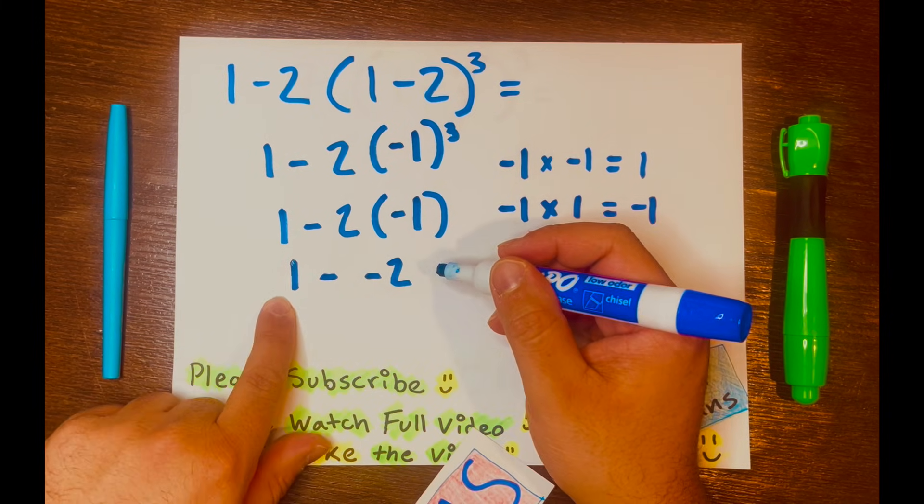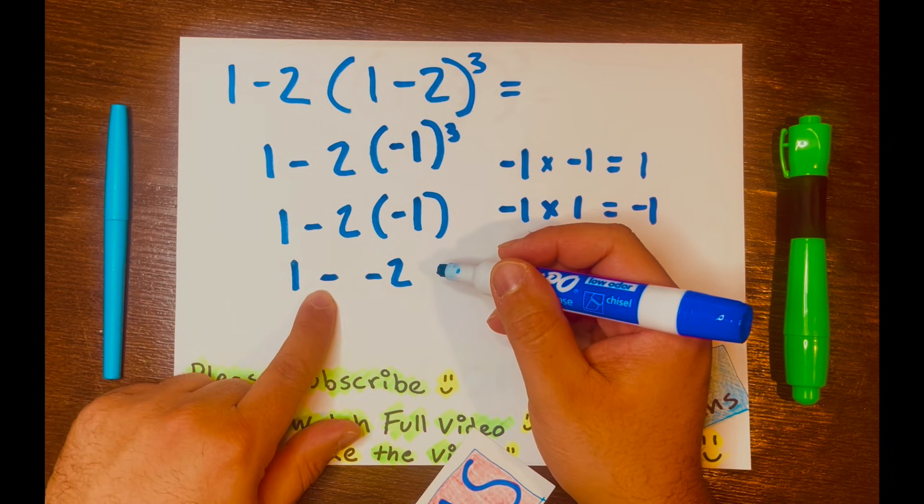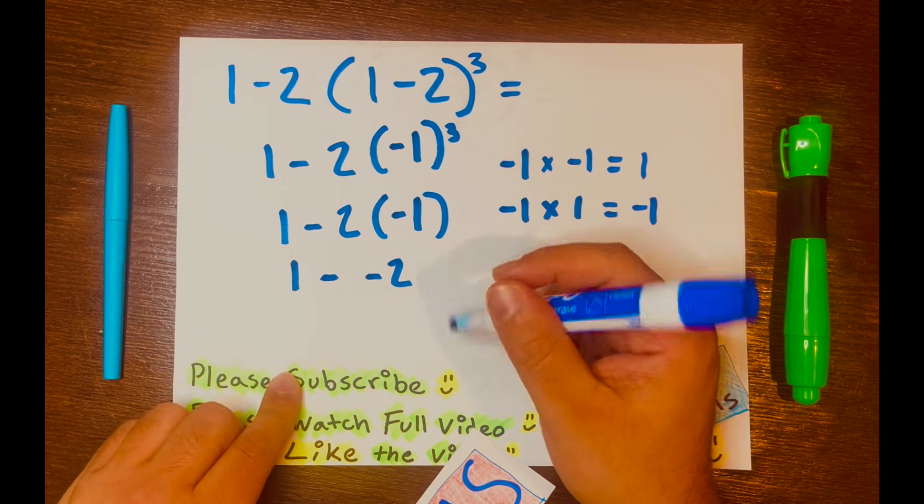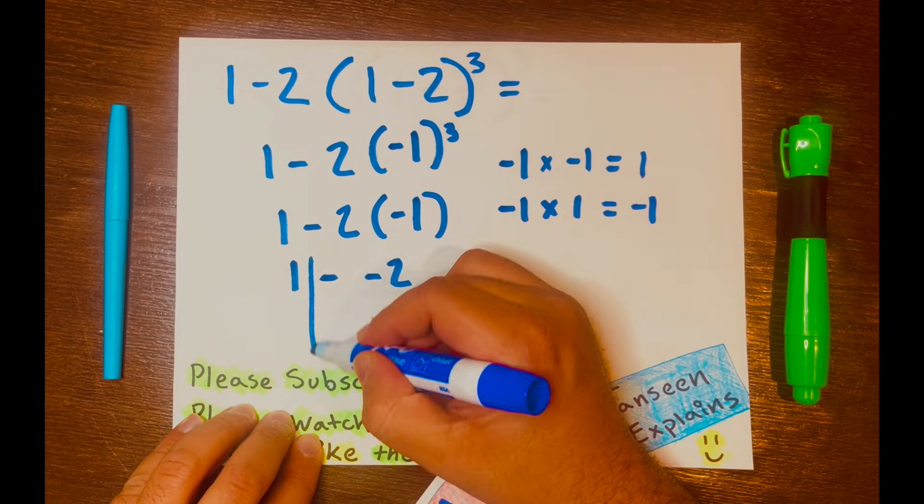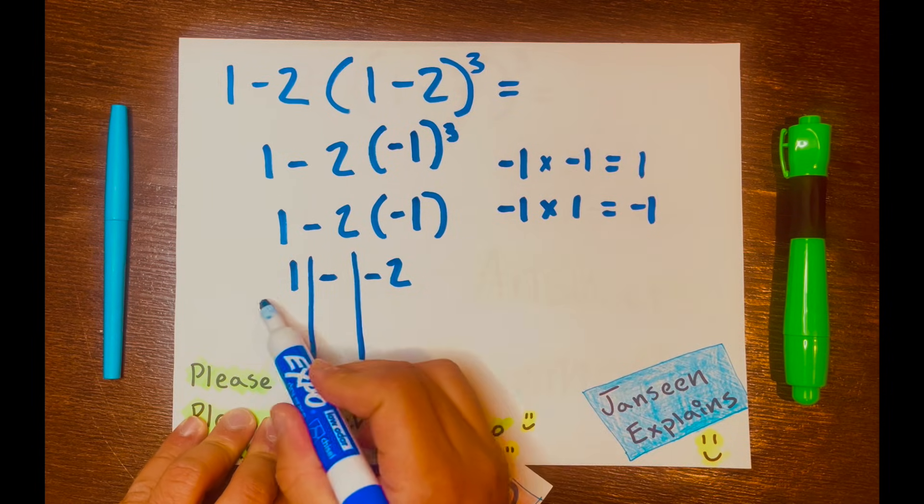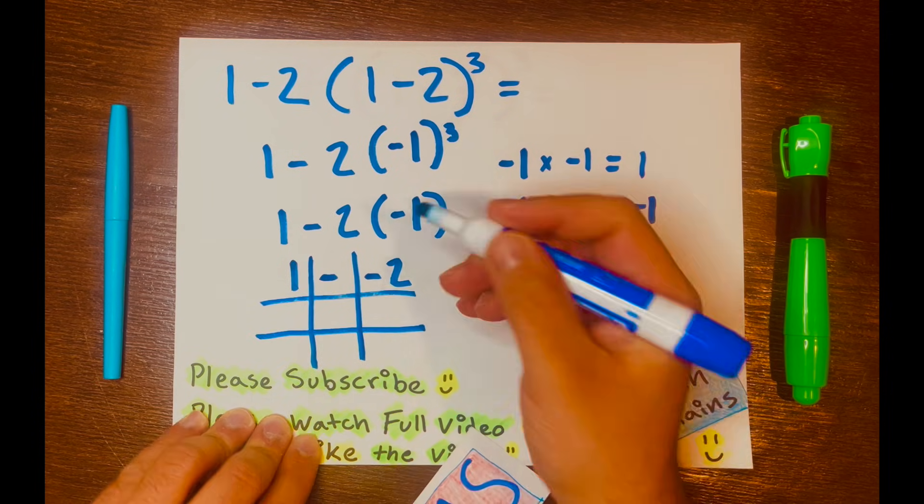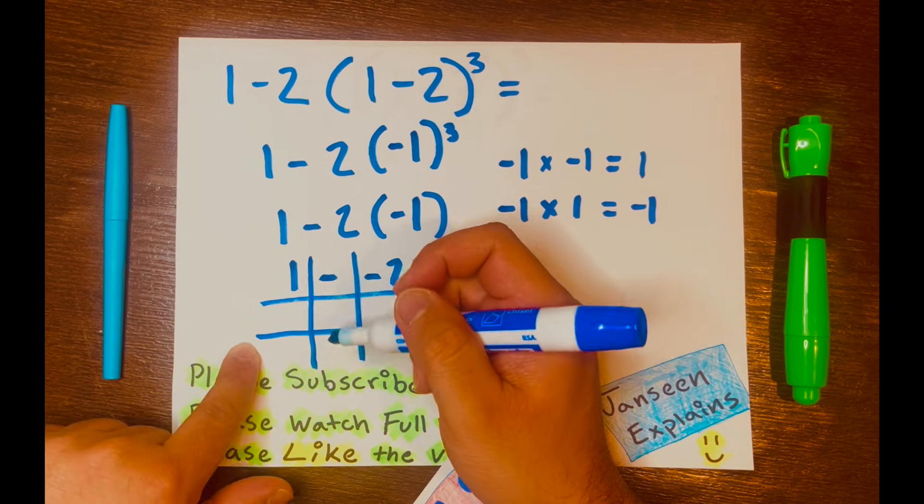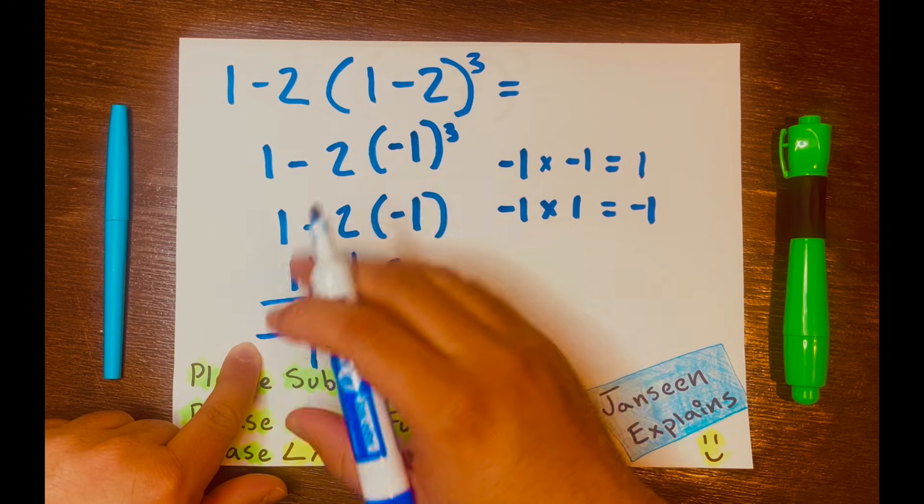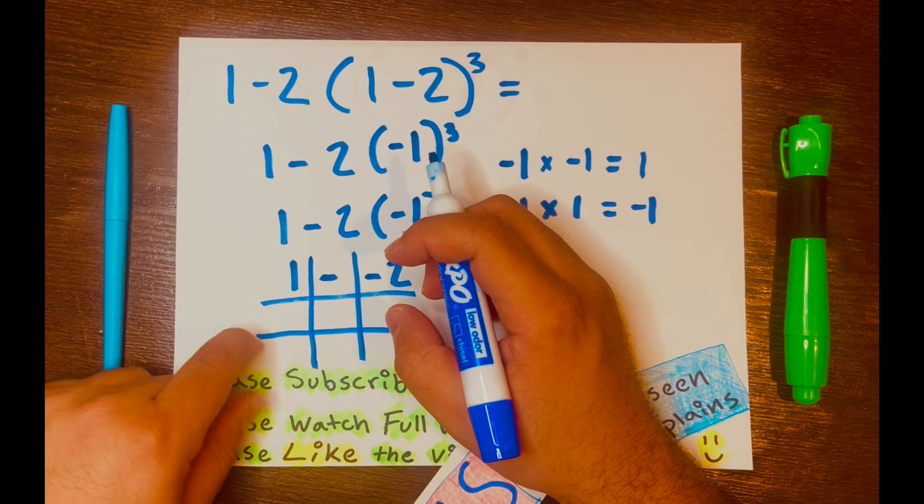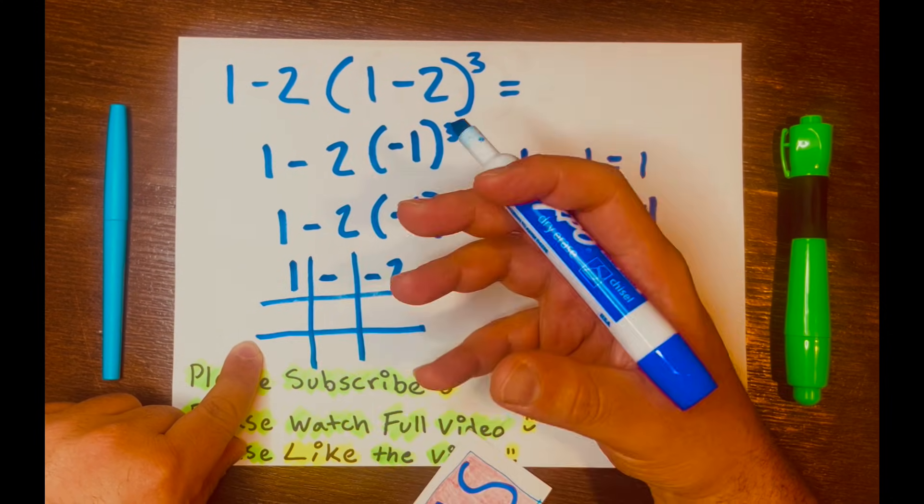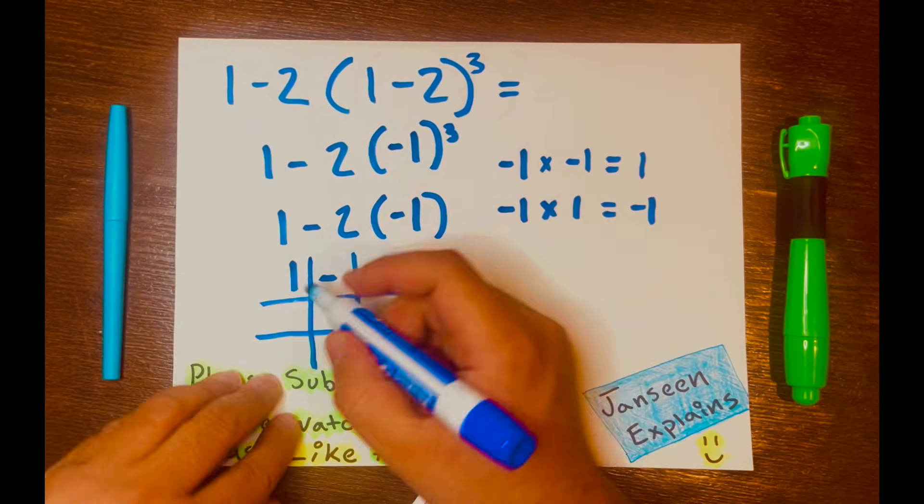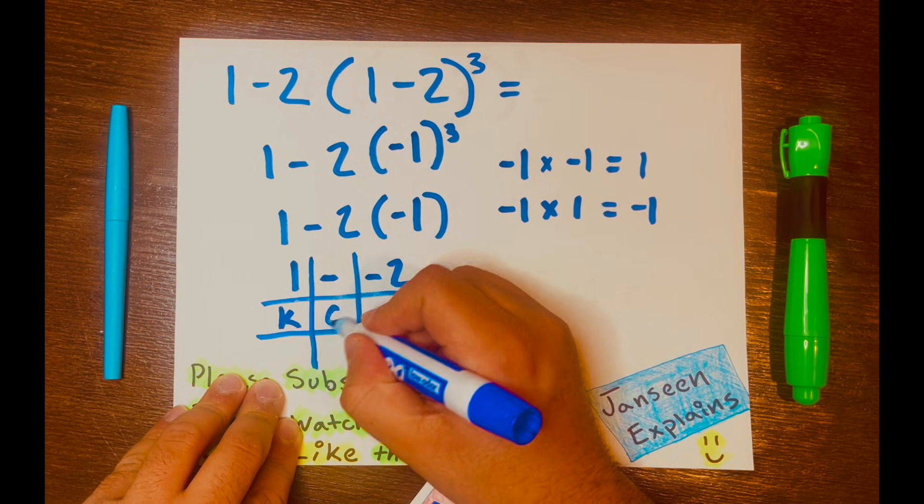Now I have a positive 1 minus a negative 2. And I'm going to be using a table like this. And this will help me organize the numbers. And I am using the subtracting integer rule, which is called keep, change, and change.